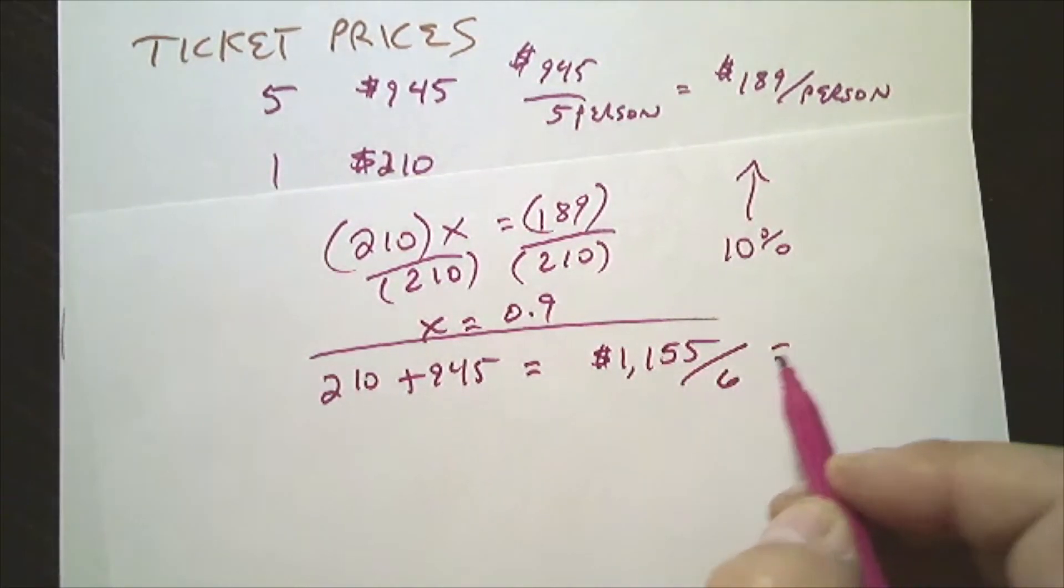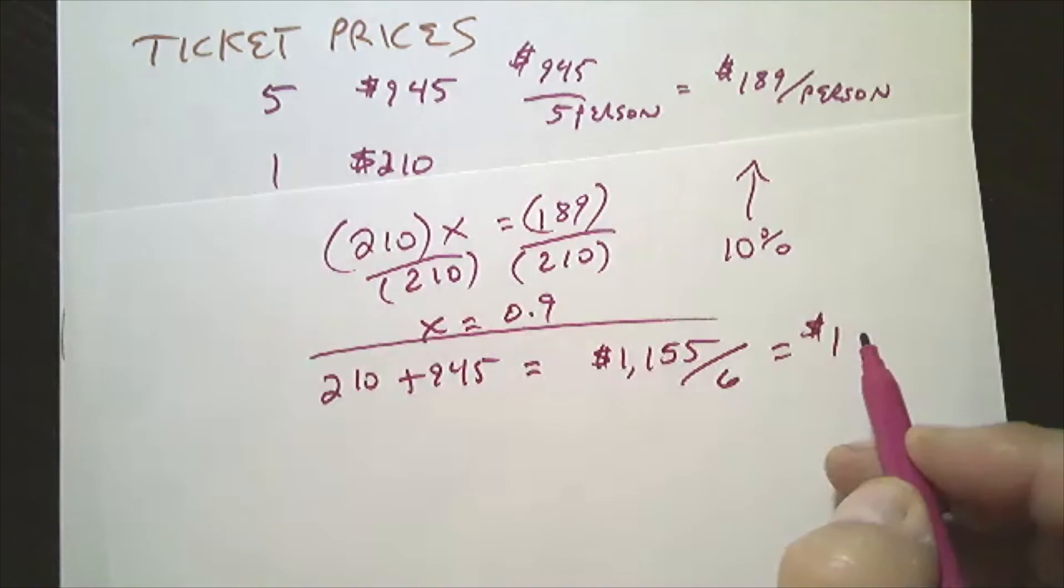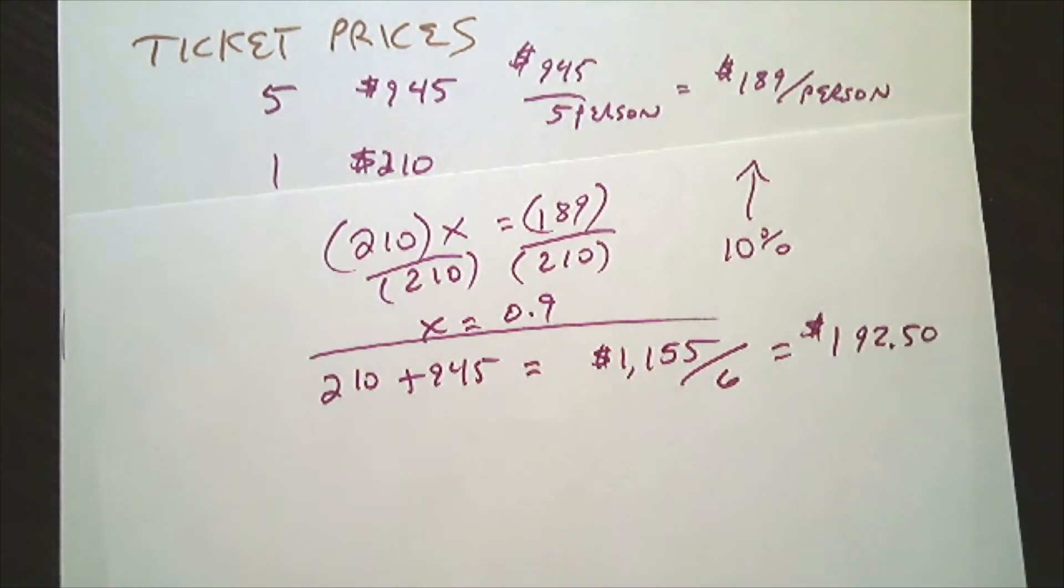So $210 plus $945 is equal to $1155. So $1155 divided by 6, you have $192.50 per person, if you wanted to share it equally.